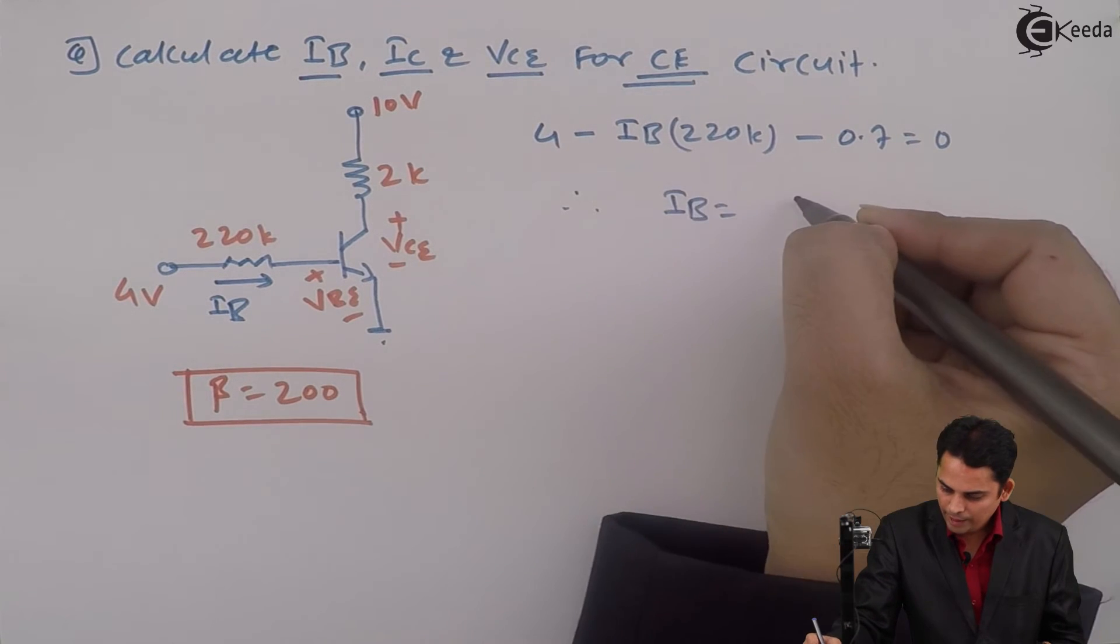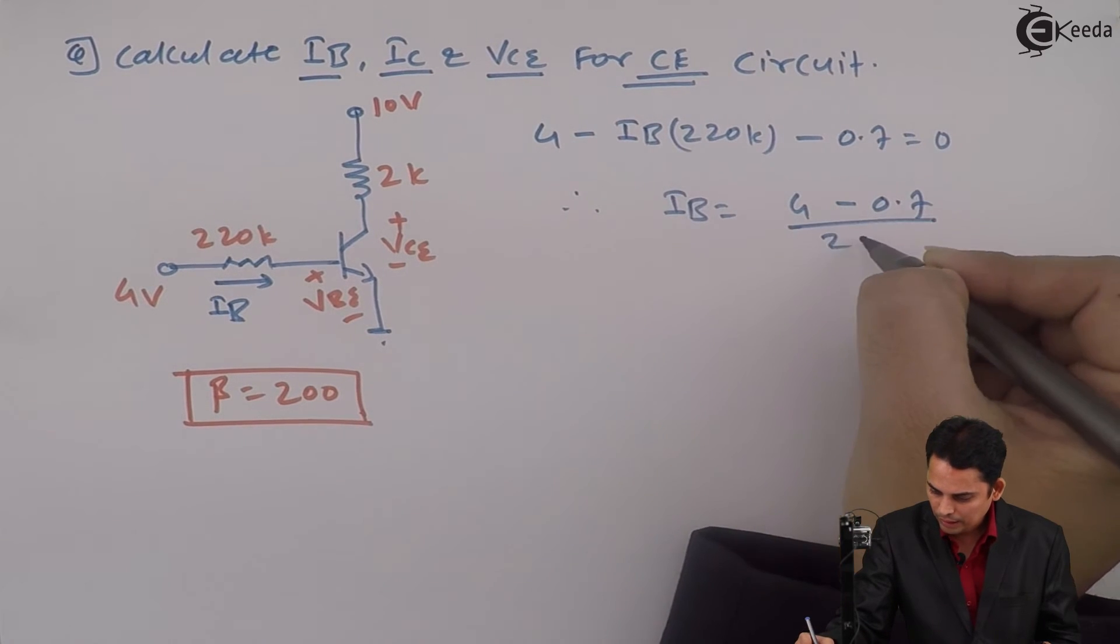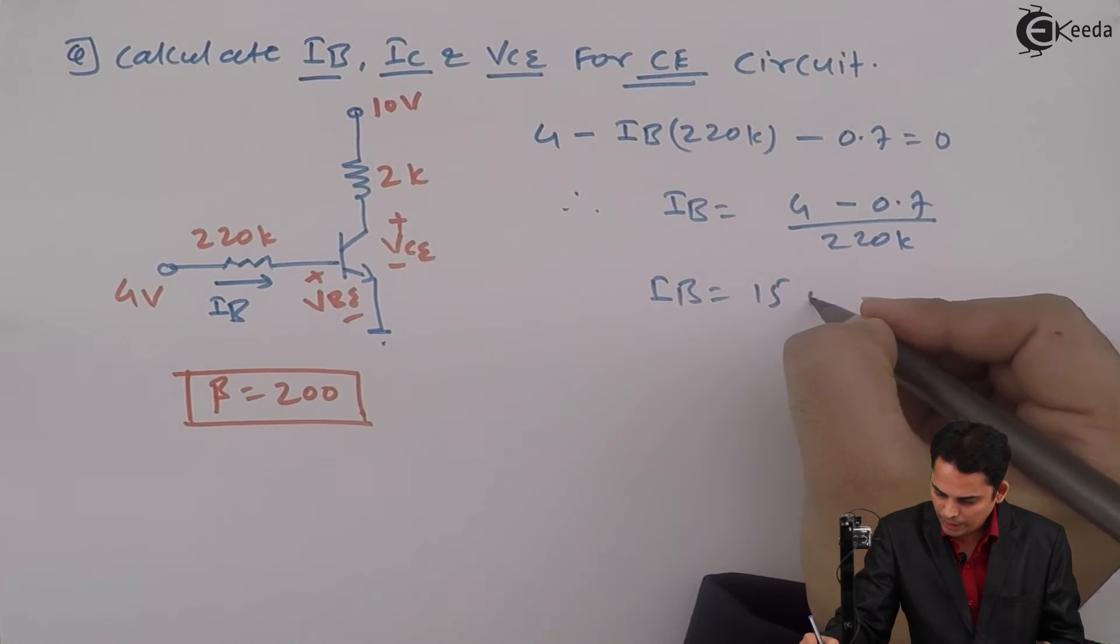Hence IB equals 4 minus 0.7 divided by 220K, and hence IB equals 15 microamperes.